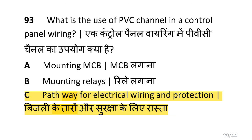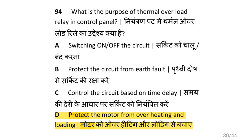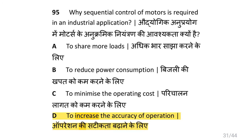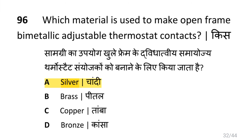What is the use of PVC channel in control panel wiring? i.e. pathway for electrical wiring and protection. What is the purpose of thermal overload relay in a control panel? i.e. to protect the motor from overheating and overloading. Why is sequential control of motors required in an industrial application? To increase the accuracy of operation. Which material is used to make open frame bimetallic adjustable thermostat contacts? i.e. silver.